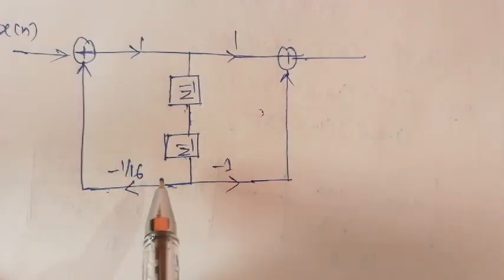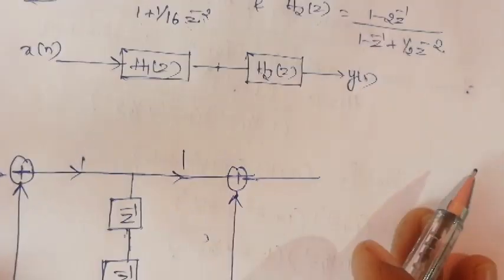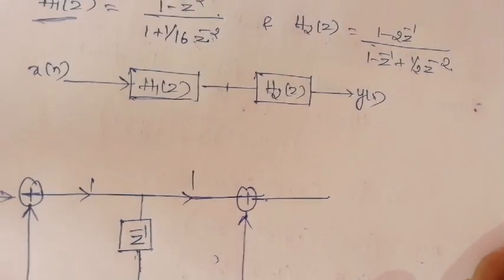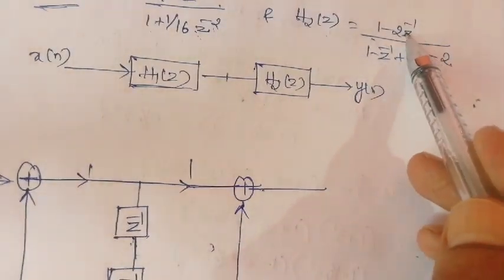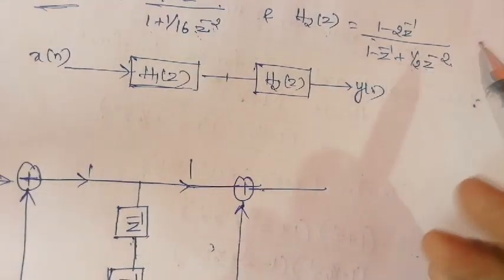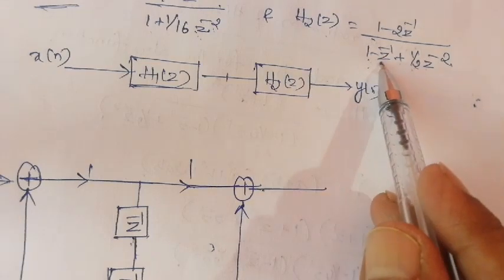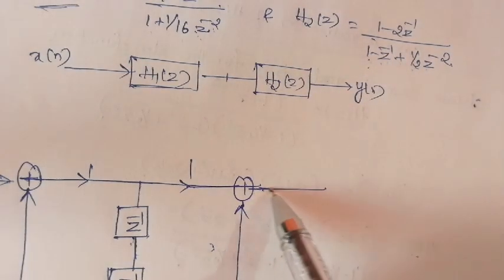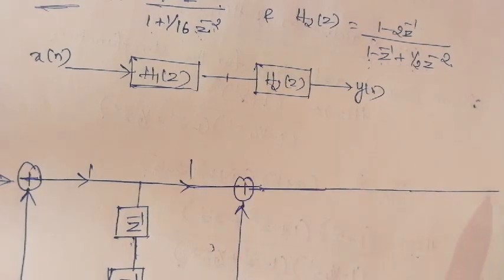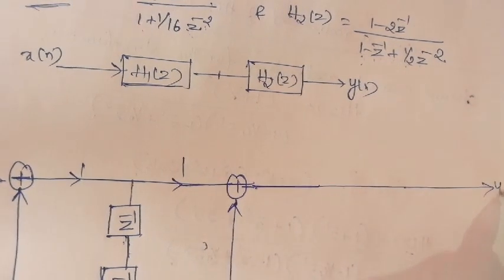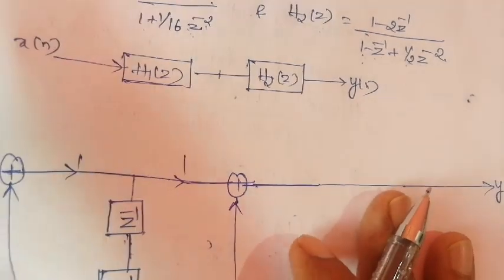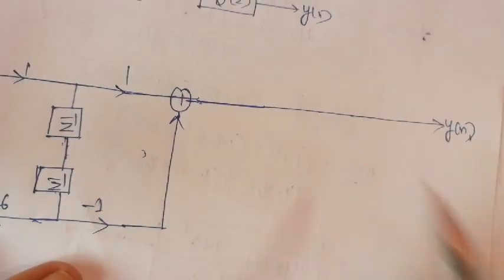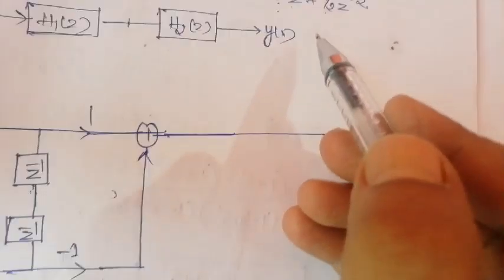Similarly, realize H2 of z in terms of Direct Form 2 realization. It also contains both a zero system and a pole system. First we realize the pole system. Recall the denominator 1 minus z to the power minus 1 plus 1/2 z to the power minus 2. The final output is y of n. Observe the denominator term first.